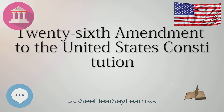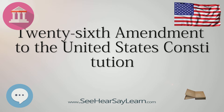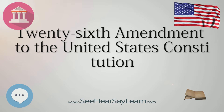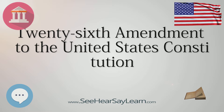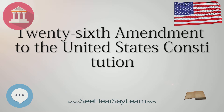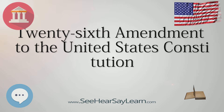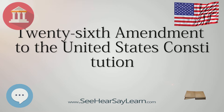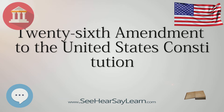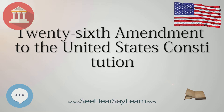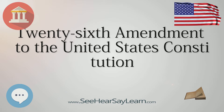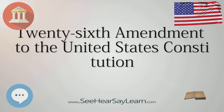On March 23, 1971, a proposal to lower the voting age to 18 years was adopted by both houses of Congress and sent to the states for ratification. The amendment became part of the Constitution on July 1, 1971, three months and eight days after the amendment was submitted to the states, making this amendment the quickest to be ratified.